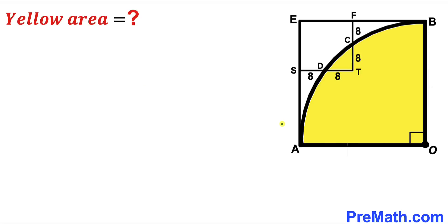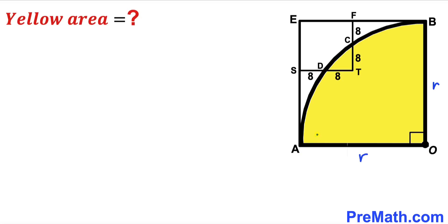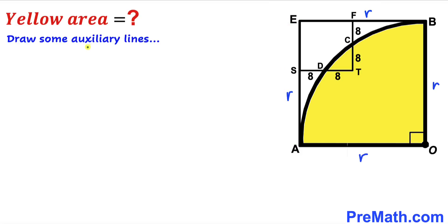Let's get started. Since we are dealing with this yellow quarter circle, let's label the radius as lowercase r. This radius is r, and since we are dealing with square AOBE, this side length is going to be radius r, and likewise this length EB is going to be radius r as well. Now we are going to draw some auxiliary lines.